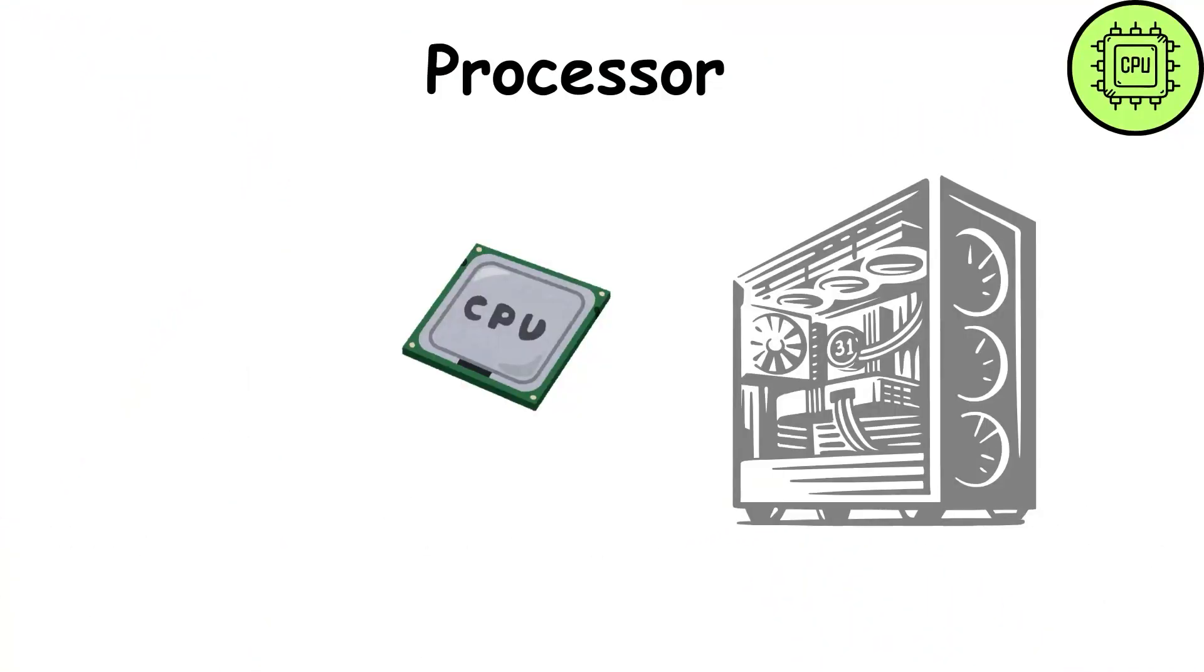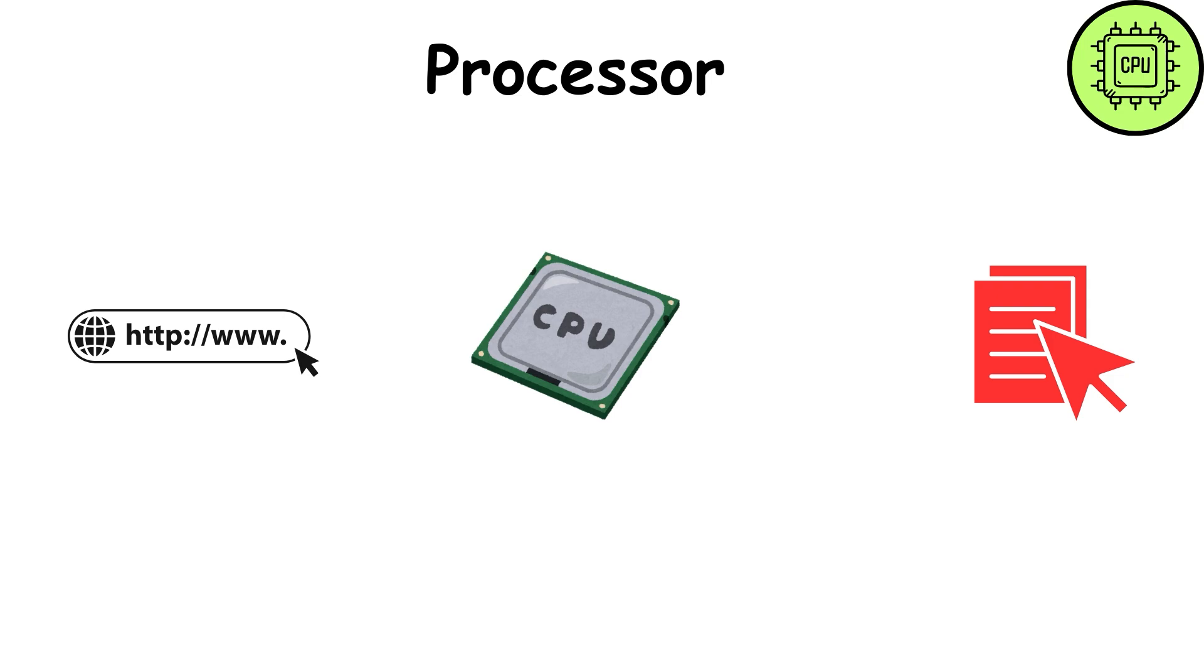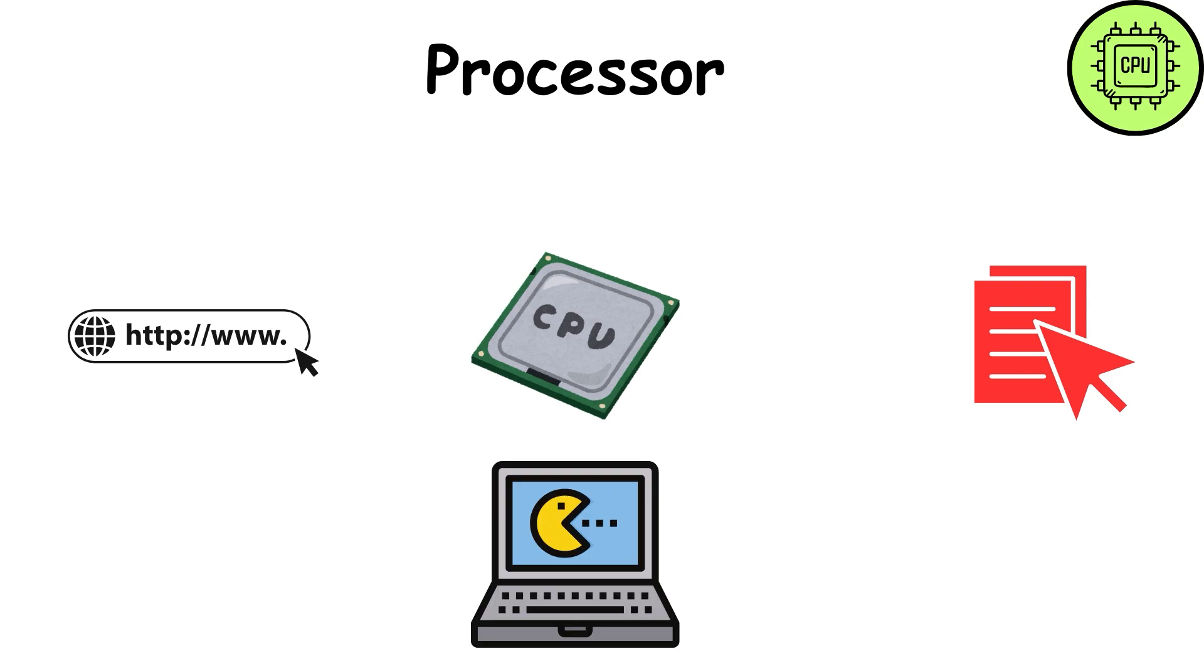Processor. The processor is like the brain of the computer. Whether you're opening a file, browsing the internet, or playing a game, every command passes through the CPU first. It makes all the decisions and carries out every operation.